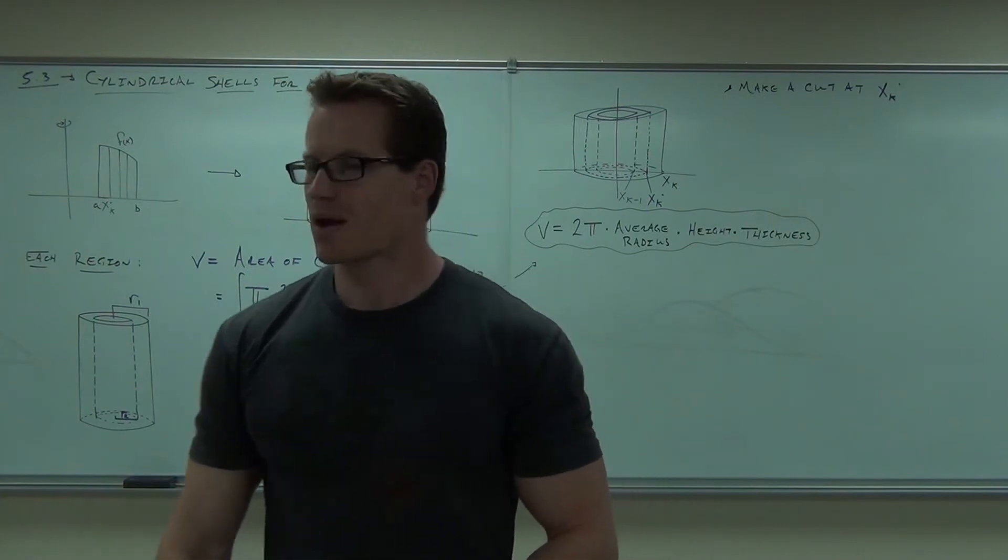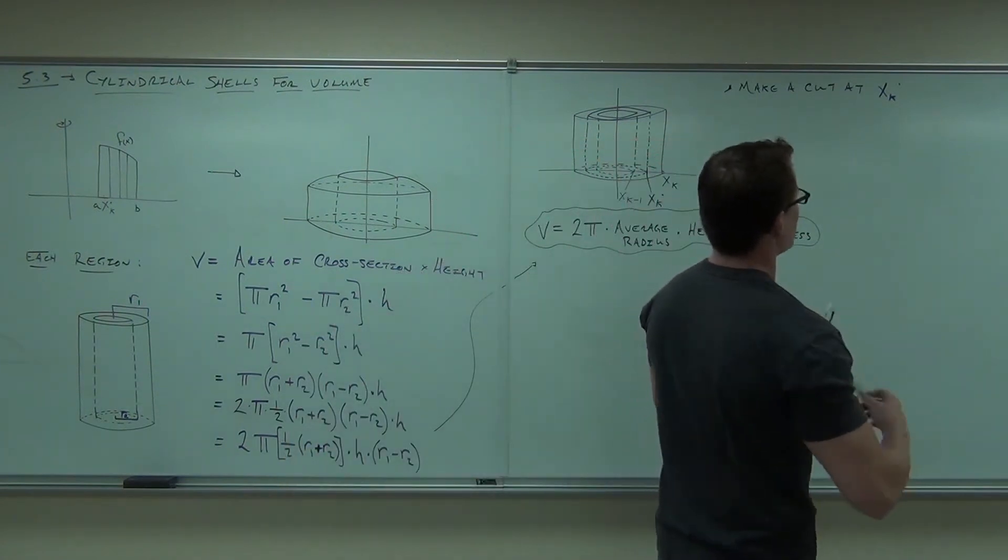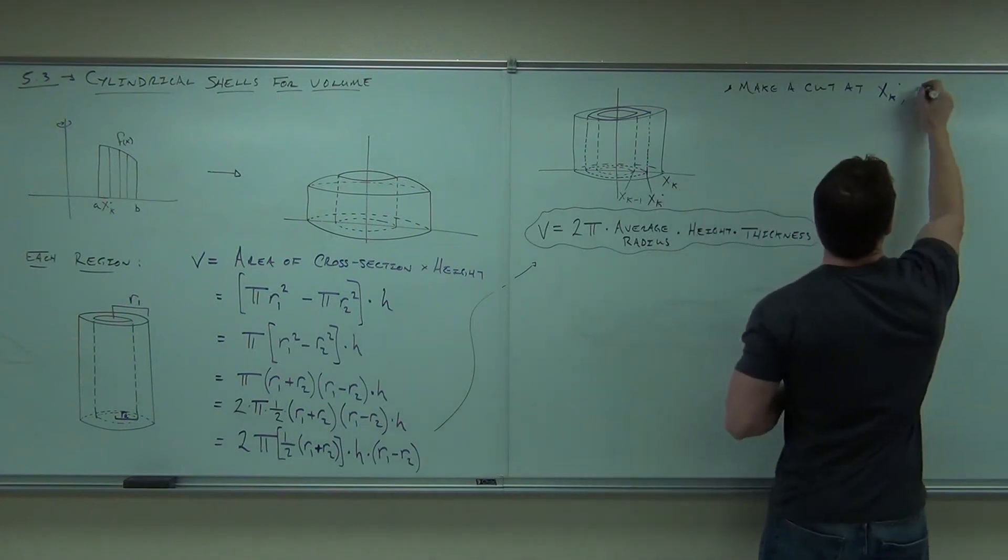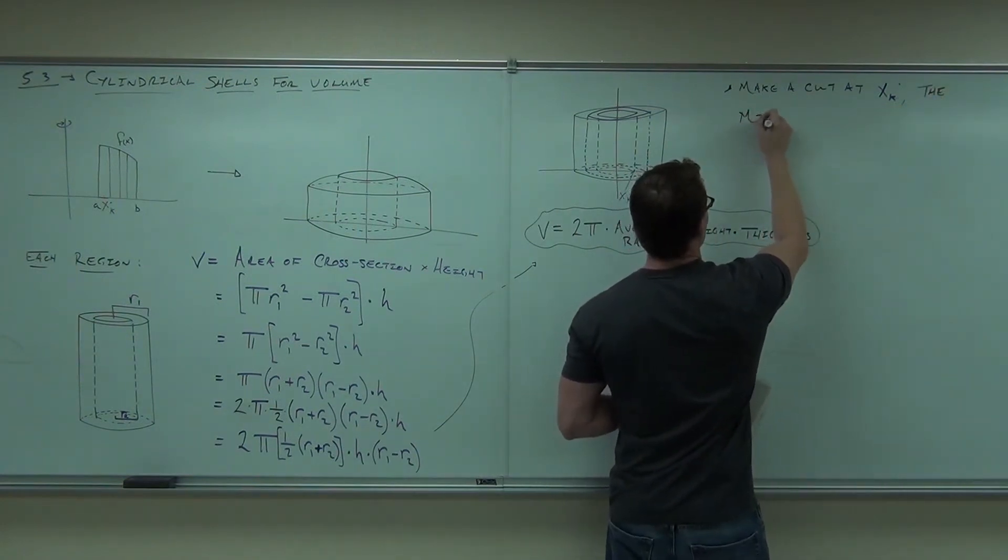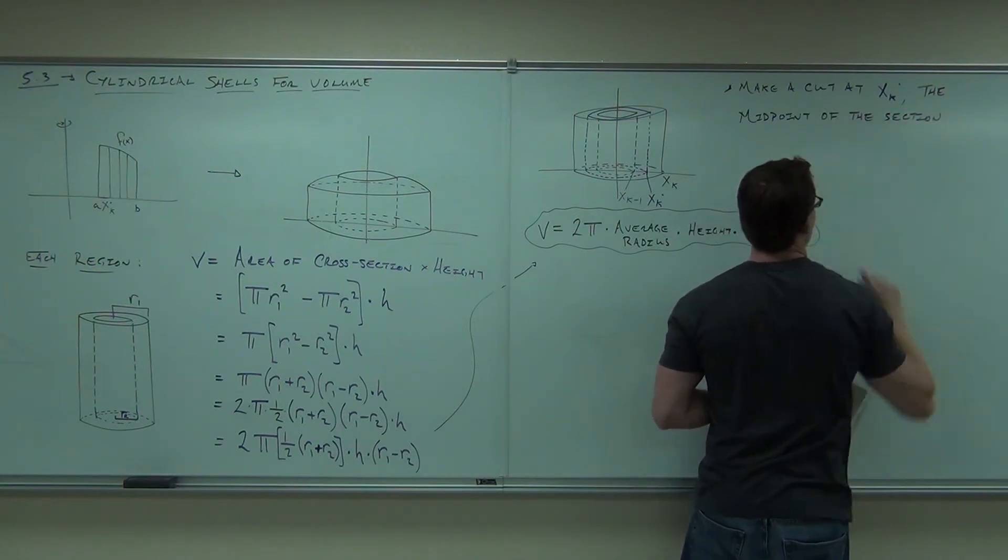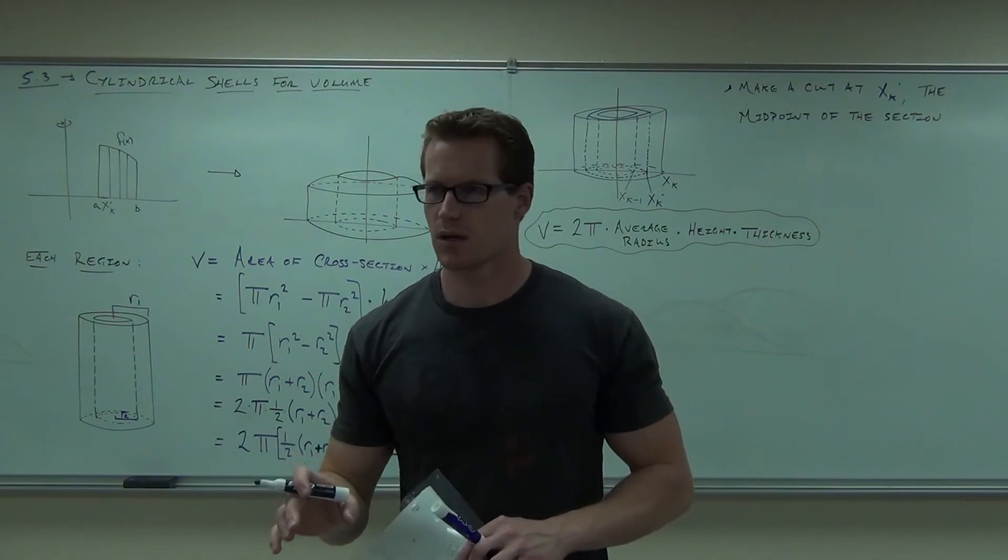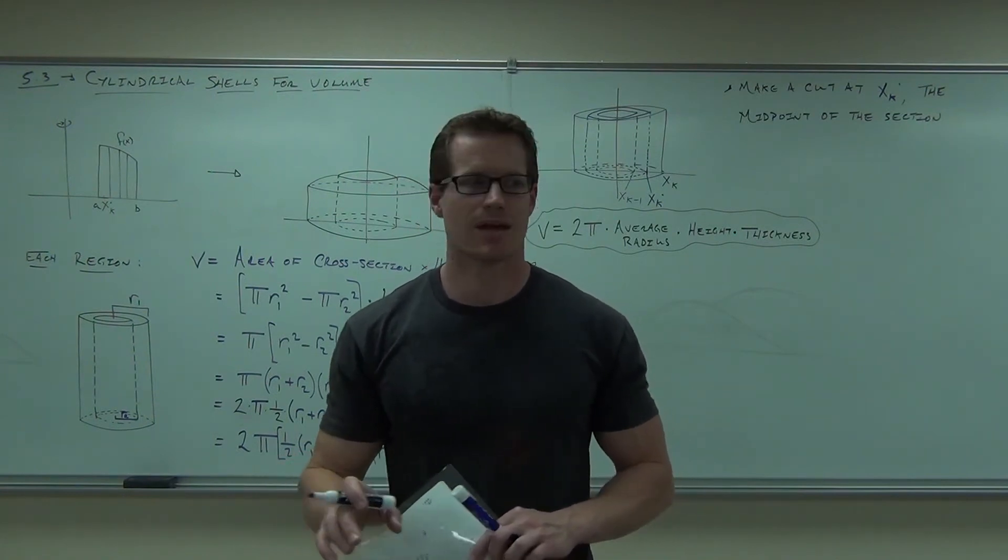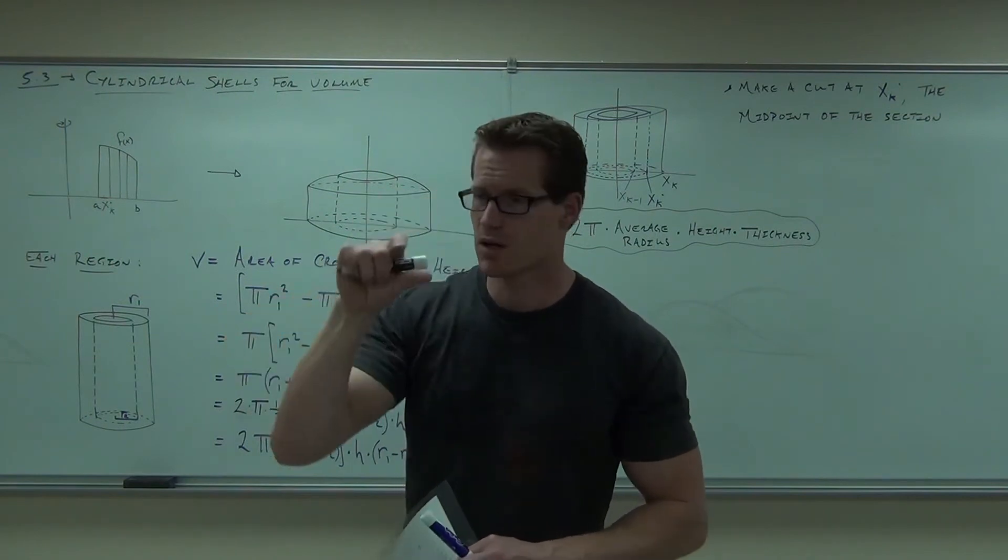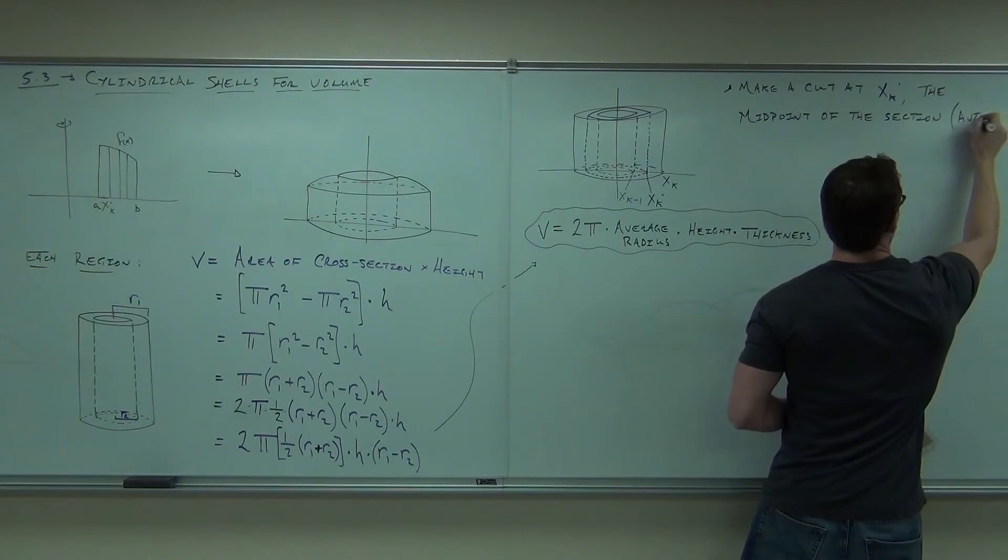Now here's the key to doing this appropriately for us. We have to choose x_k dot to be the midpoint of that interval. You'll see why in a second. So make a cut at x_k dot, which is going to be the midpoint of our section. Can you tell me something? In relation to x_k, x sub k, x sub k minus 1, what's the midpoint? Average. We're going to use that in a second. Would you agree that if I put x_k dot right in the middle of our section, it's the average of those two numbers, no matter what they are?